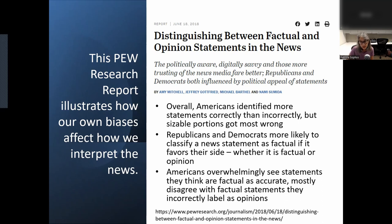Even more revealing is that certain Americans do far better at parsing through this content than others. In addition to political awareness, party identification plays a role in how Americans differentiate between factual and opinion news statements. Both Republicans and Democrats show a propensity to be influenced by which side of the aisle a statement appeals to most. Members of each political party were more likely to label both factual and opinion statements as factual when they appealed more to their political side.